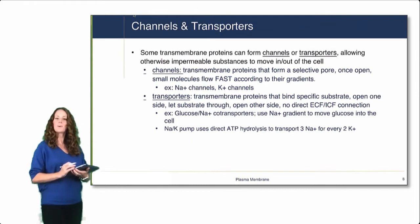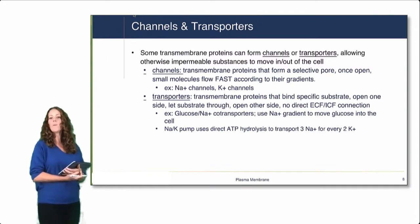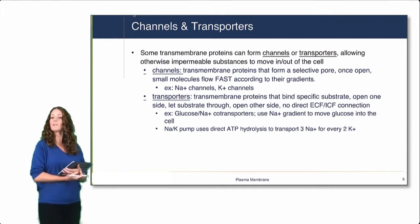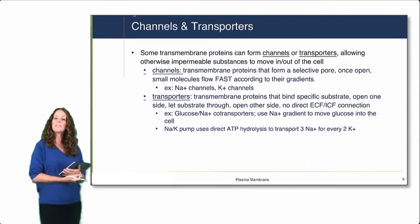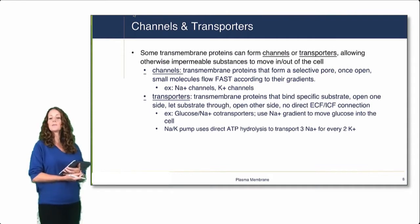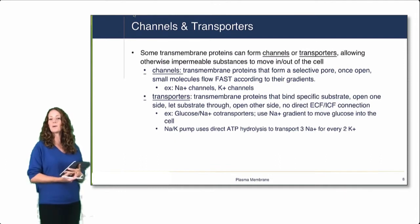Some transmembrane proteins form channels or transporters, allowing otherwise impermeable substances to move in and out of the cell. Channels are transmembrane proteins that form a selective pore — once open, small molecules flow fast according to their gradients, with a direct open connection between the ECF and ICF. Examples include sodium channels and potassium channels. Transporters are also transmembrane proteins that bind specific substrates, opening to one side to let the substrate through, then opening to the other side — no direct ECF-ICF connection. Examples include glucose-sodium transporters using the sodium gradient, and active transporters like the sodium-potassium pump using ATP hydrolysis.